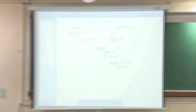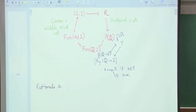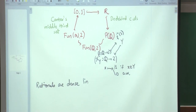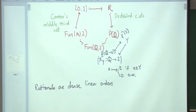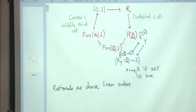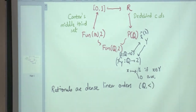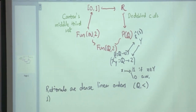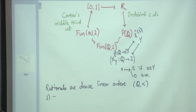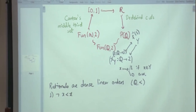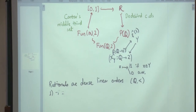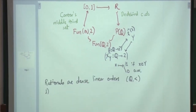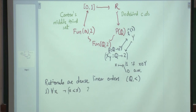Rationals are dense linear orders. Let us quickly recall what linear order means — here I am talking about rationals with the less-than relationship. What are the properties of this strictly less-than relationship? Can an element be related to itself? No. So the first property is: for all x, negation of x less than x.